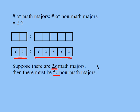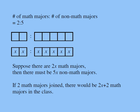Now the question also says, if two more math majors joined, there would be 2x plus 2 math majors. So if currently there are 2x math majors and two more joined, the new number would be 2x plus 2. And the number of non-math majors is not changing.